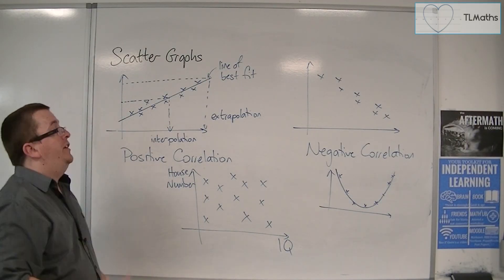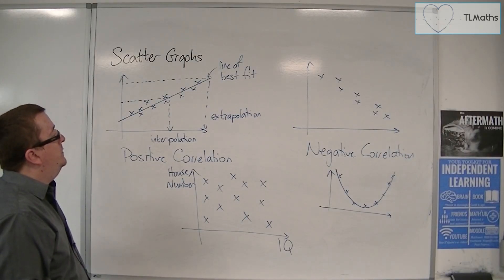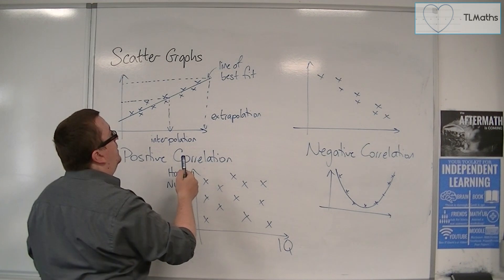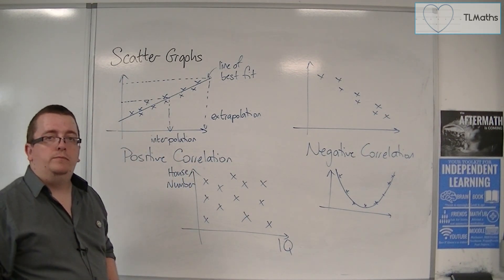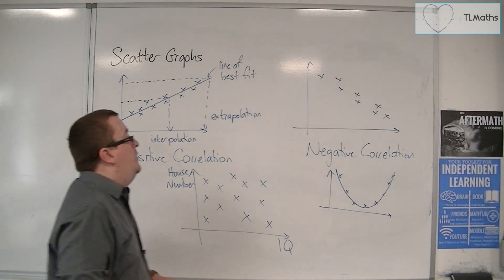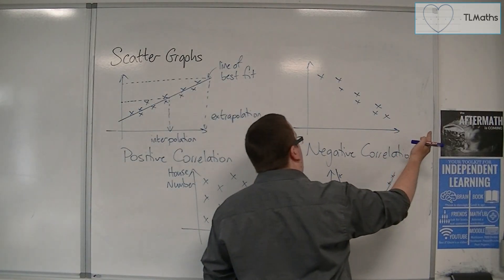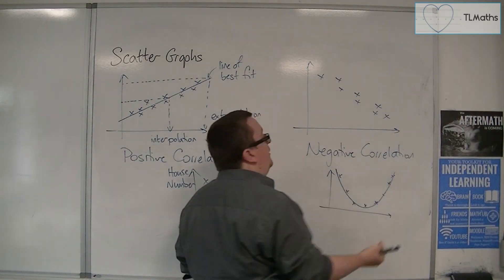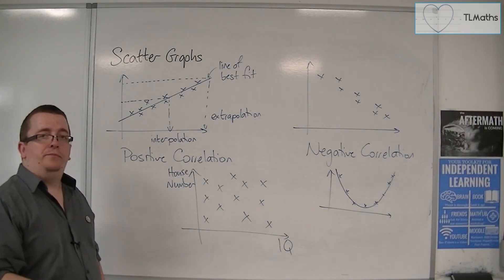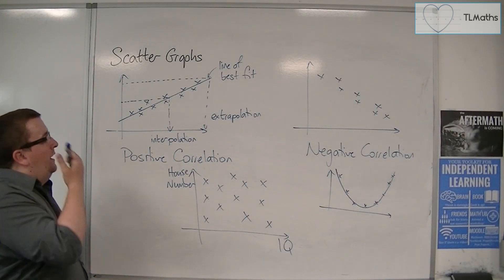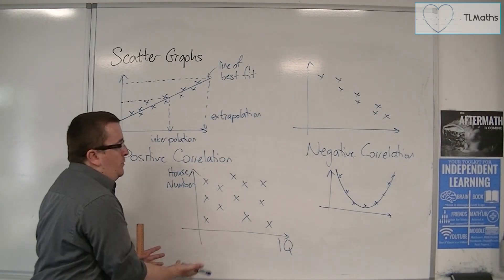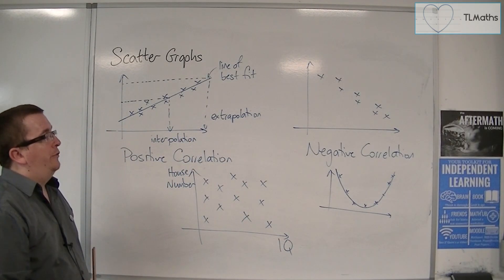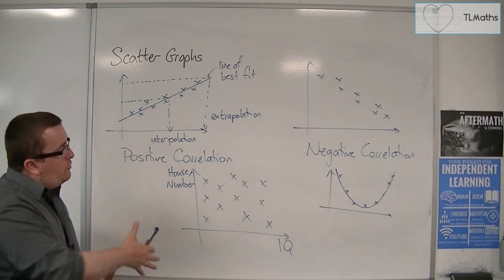So the taller somebody is, the larger their shoe size, for example. The more rain we have, the fewer ice cream sales we have. And as I said, there is no correlation between something like IQ and house number. And so this is kind of a very general look at scattergraphs.